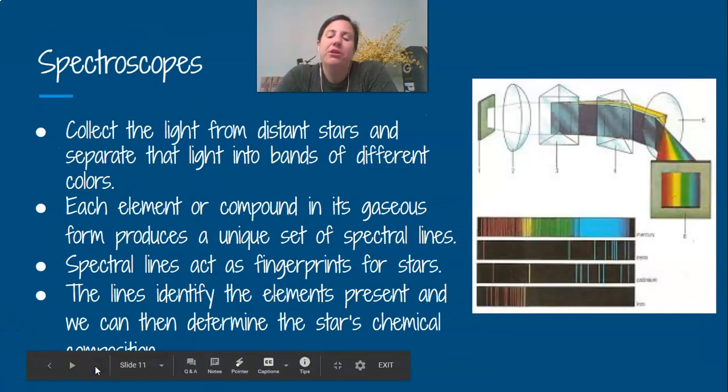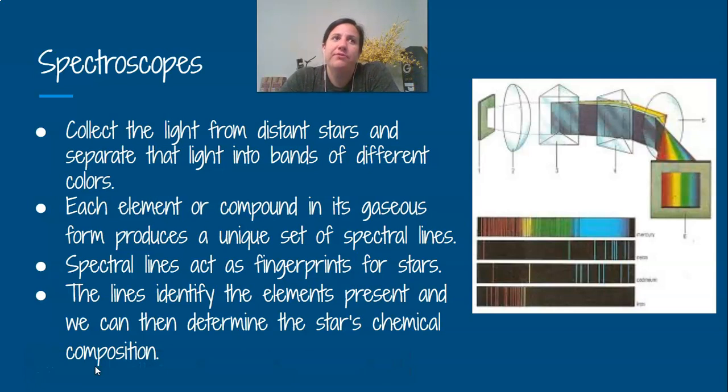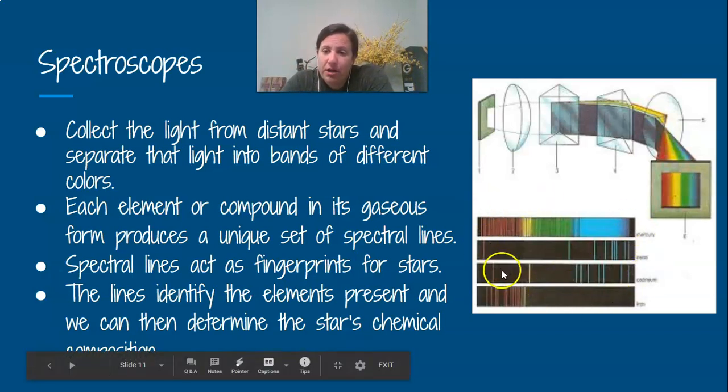And then finally, we have something called a spectroscope. A spectroscope is going to produce kind of like somebody, when you take fingerprints, this is what a spectroscope is going to do, kind of like taking the fingerprints of stars. So a spectroscope is going to collect light, and then each element will produce a different, you can see down here, each element is going to produce a different picture.